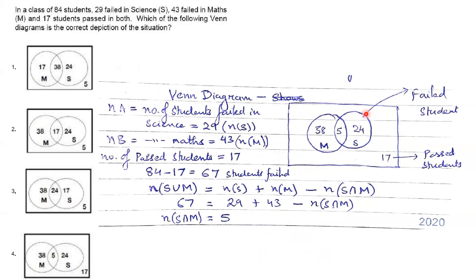In this Venn diagram, the circles represent the number of students who failed and the number written outside shows the number of students who passed. The data given is: 29 failed in science, 43 failed in maths, and 17 passed in both subjects. From 84 students, we subtract those who passed to get the total number of students who failed, giving us 67 students who failed in either science or maths.